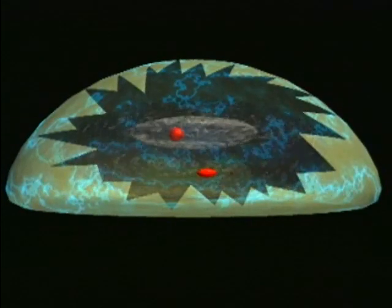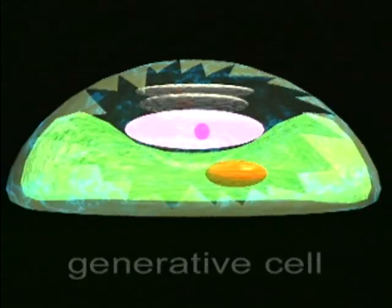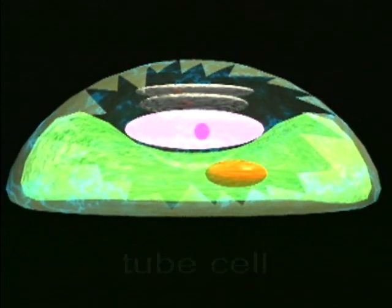Three successive mitotic divisions now take place. These create two small prothallial cells, one generative cell, and one tube cell.